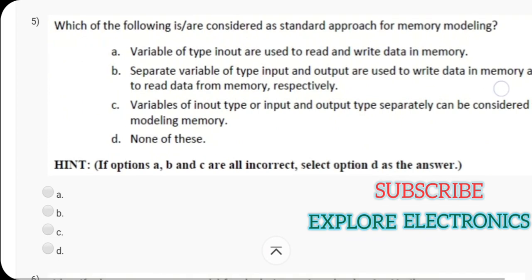And question 5, which of the following is considered as standard approach for memory modeling. Here the variable of type input output that is inout are used to read and write memory data in memory, that is wrong. So the answer is B here. Separately we need separate variable of type input and output need to be used.